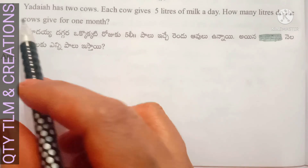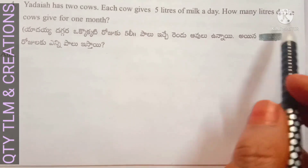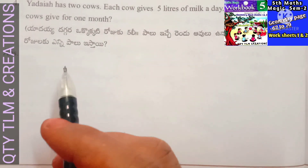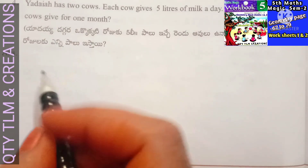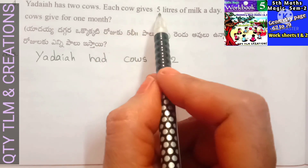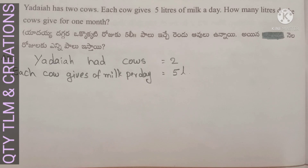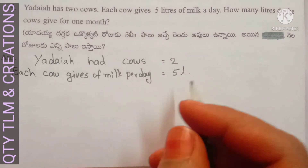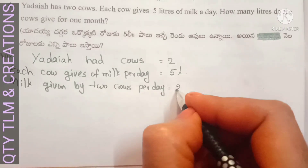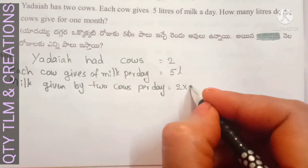Next question: Yadaya has two cows. Each cow gives five liters of milk a day. How many liters do the cows give for one month? Yadaya has two cows. Each cow gives five liters of milk per day. Milk given by two cows per day equals two fives, which is ten liters.